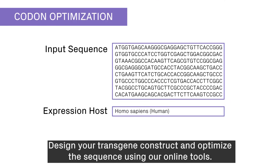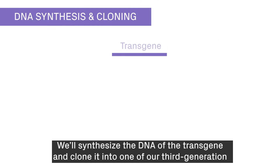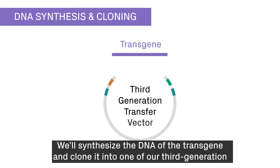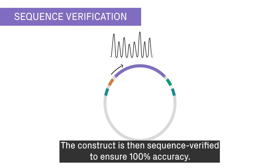Design your transgene construct and optimize the sequence using our online tools. We'll synthesize the DNA of the transgene and clone it into one of our third-generation lentivirus vectors, or a custom vector that you provide. The construct is then sequence verified to ensure 100% accuracy.